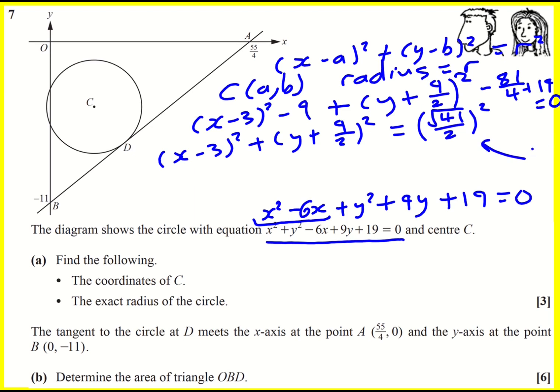Okay, that is actually the same as 41 over 4. I've put it in that form because now I can write down the coordinates of C. It's going to be 3, minus 9 over 2, and the exact radius is going to be root 41 over 2.